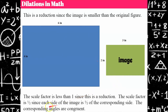The scale factor is less than one — it's one half — so therefore it's a reduction. If the scale factor were greater than one, then it would be an enlargement. Since the image's corresponding sides are proportional and corresponding angles are congruent, we have similar figures.